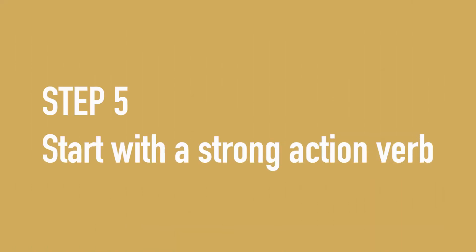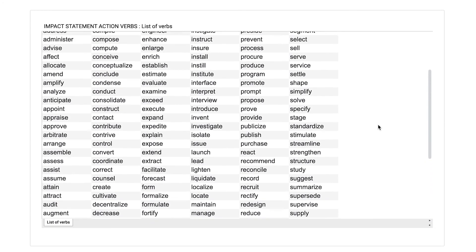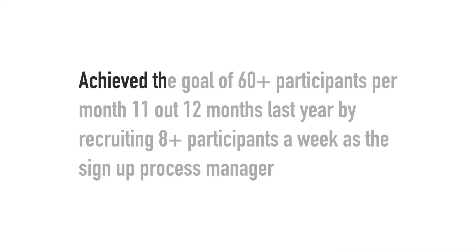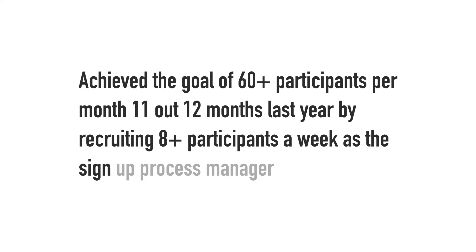The last step — step five — is to start with a strong action verb that connects all of the ideas in your impact statement. My statement starts with 'met,' which is not a very strong action verb. It sounds like I was just meeting expectations for my job rather than doing something amazing, so I want to pick a stronger verb. There are action verb lists online you can look through and we've provided one in the portal too. Looking at this list, the first verb that pops up is 'achieved,' which fits my statement and sounds impactful. So I'll update my statement to: 'Achieved the goal of 60 plus participants per month 11 out of 12 months last year by recruiting 8 plus participants a week as the sign-up process manager.'